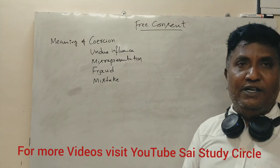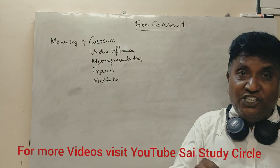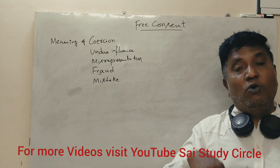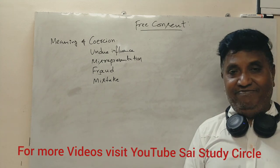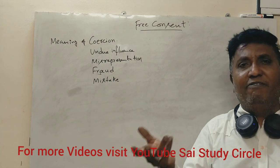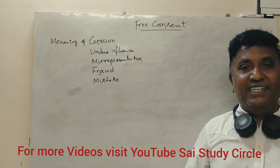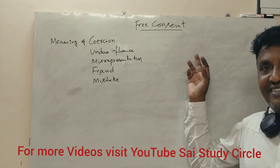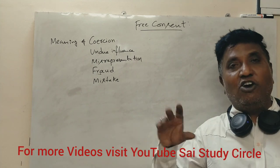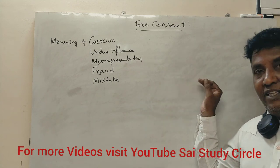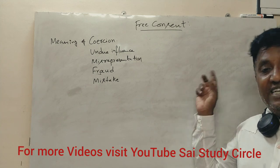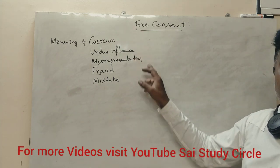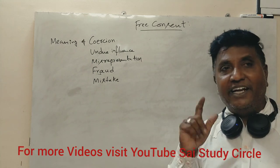What is fraud? Fraud is intentionally committing a mistake in order to deceive a person — knowingly making an error to cheat someone. What is mistake? Mistake is a simple erroneous error. For example, you meant to write 15,650 but erroneously wrote 15,560 without your knowledge — that is called a mistake. So these are the five points on free consent. One question is likely for sure. Thank you so much.